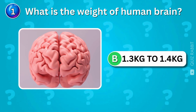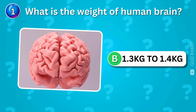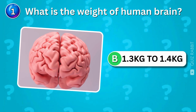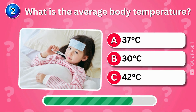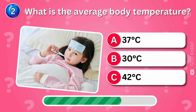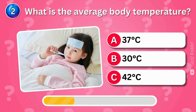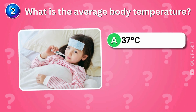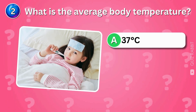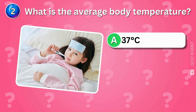The brain weighs about 1.3 to 1.4 kilograms — it's small but mighty, controlling everything we do. What is the average body temperature? The average body temperature is 37 degrees Celsius, perfect for keeping things running smoothly.